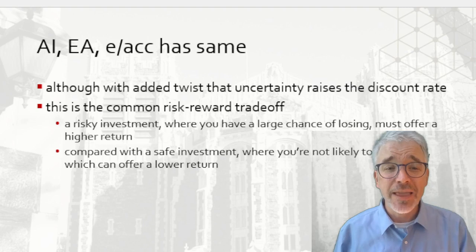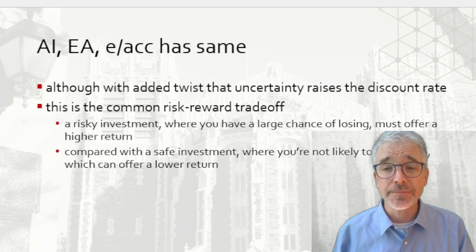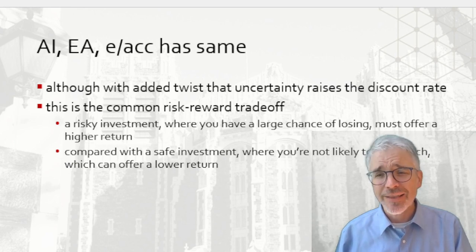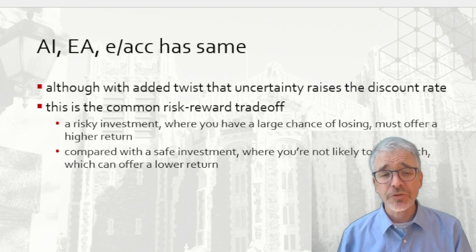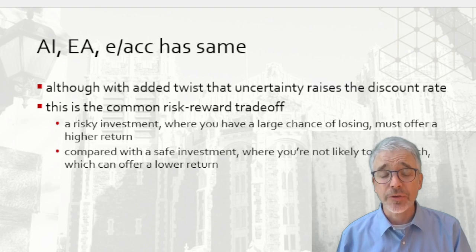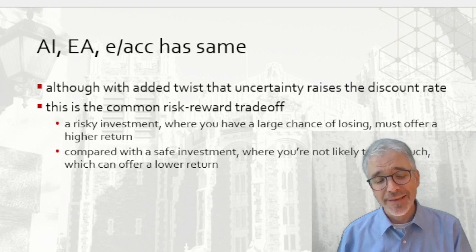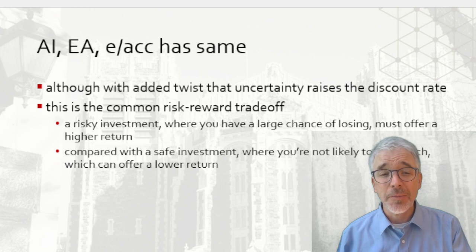What is a reasonable interest rate to use when discounting future costs and benefits? With the additional question of how to adjust for risk — usually a risky outcome has a higher discount rate. That gives the common risk-reward trade-off: a risky investment, where there's a substantial possibility you lose your money, must offer a high return to compensate. But a safe investment can offer a lower return because of that safety. There are a lot of disagreements about what is the right amount to discount the future, but it is an important question.